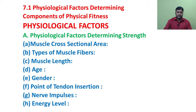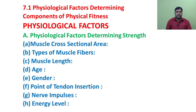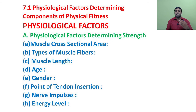The last factor for strength is energy level. The energy for muscular contraction is derived from the breakdown of phosphogens — ATP and CP. Strength also depends on the level of phosphogen stores in the body. These stores are particularly required for strength endurance.